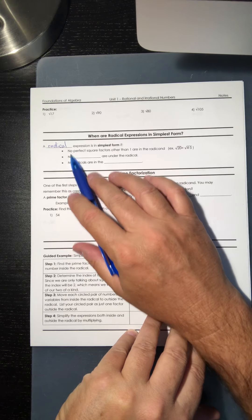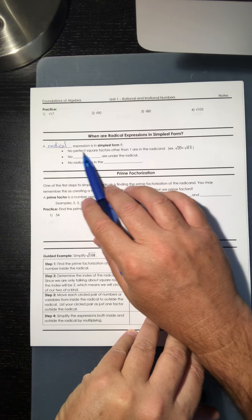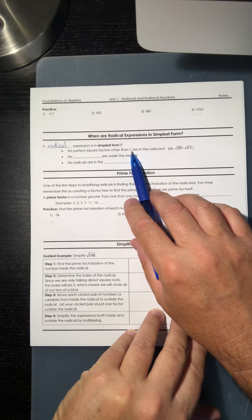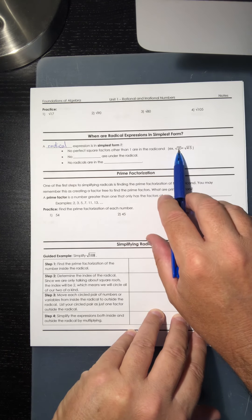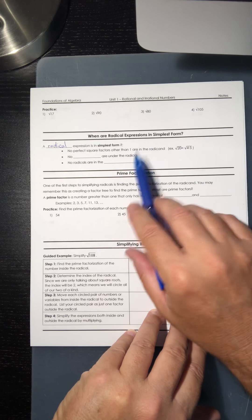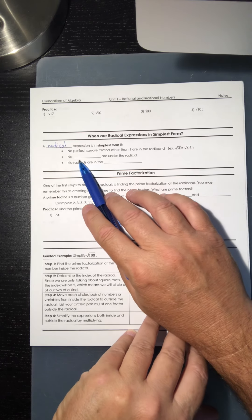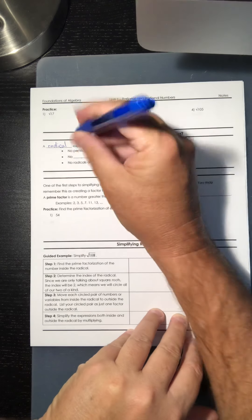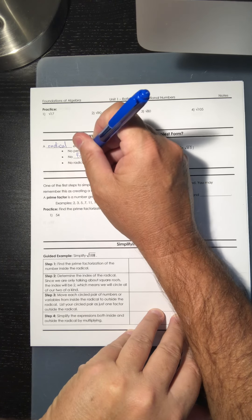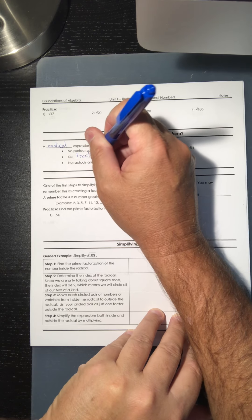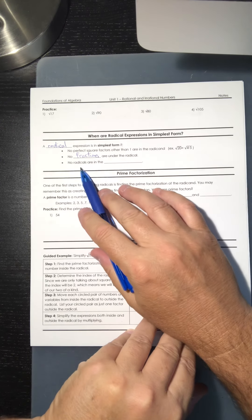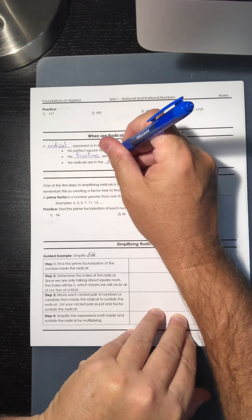To fill in these blanks, a radical expression is in its simplest form if it follows these three bullet points. The first is that there cannot be any perfect squares other than one in the radicand or underneath the house. Can't be any perfect squares underneath the house. There can't be any fractions, so no fractions are under the radical.